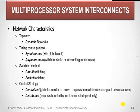The next characteristic is the switching method. There are two types: circuit switching and packet switching. In circuit switching, once a device is granted a path in the network, it occupies that path for the entire duration of the data transfer. In packet switching, the information is broken into small packets that individually compete for a path in the network.